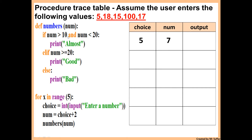Inside the procedure: is 7 greater than 10? No. Is 7 greater than or equal to 20? No. So we go to else and display 'bad'. The procedure finishes and we return to the for loop. Next, choice is 18, so num becomes 20. We pass 20 into the procedure. Is 20 greater than 10 and less than 20? No. Is 20 greater than or equal to 20? Yes — so we display 'good'.